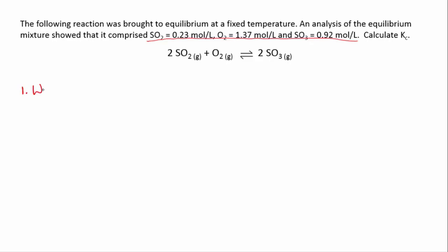Our first step is always to write the equilibrium expression, because you can't go anywhere without it. So we write it down: Keq or Kc equals the product's concentration of sulfur trioxide, and that has a stoichiometric coefficient of two, so we raise it to the power of two.